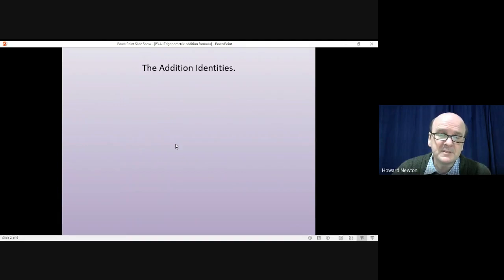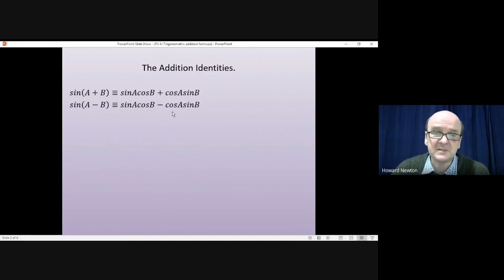For example, the first one, the sine of two angles added together, sin(A + B) is identical to sin A cos B plus cos A sin B. And the identity sign means that this statement is always true for every value of A and B. The sine of one angle take away another angle is sin A cos B take away cos A sin B. Same as the previous one, just changing the sign in the middle.